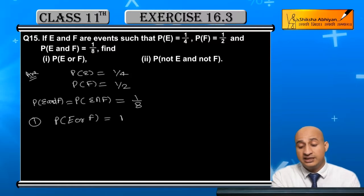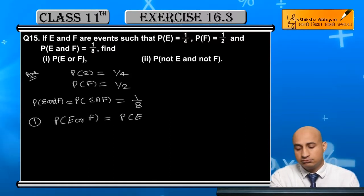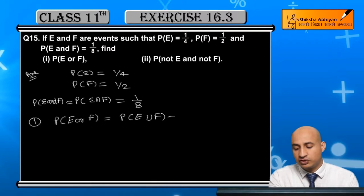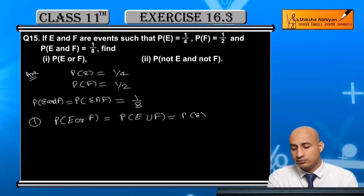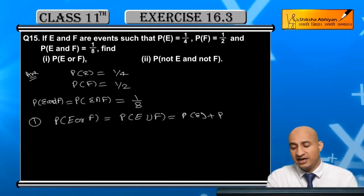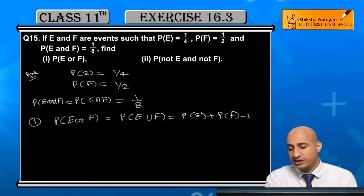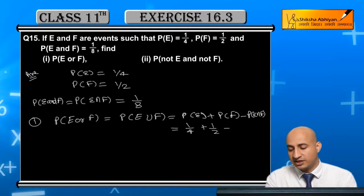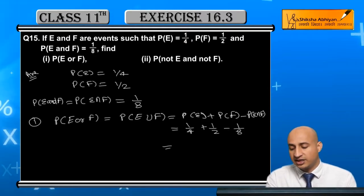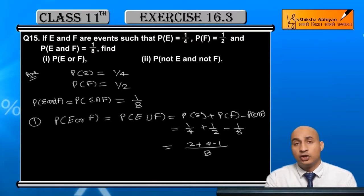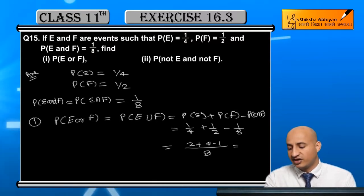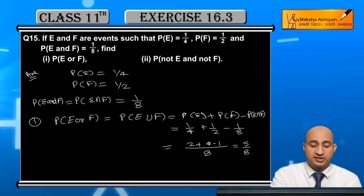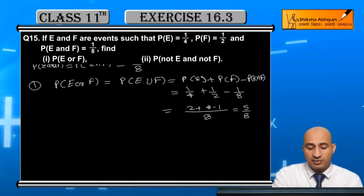For the first case, P(E or F) means P(E union F), which equals P(E) + P(F) - P(E intersection F) = 1/4 + 1/2 - 1/8. Taking LCM as 8: 2/8 + 4/8 - 1/8 = 5/8. So the answer for the first part is 5/8.